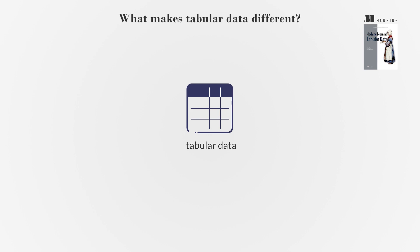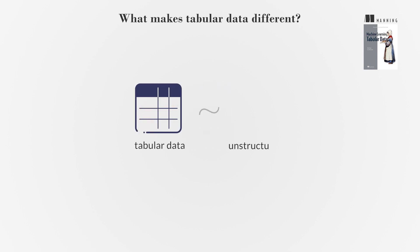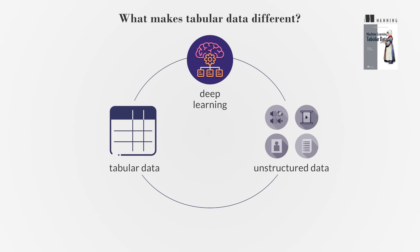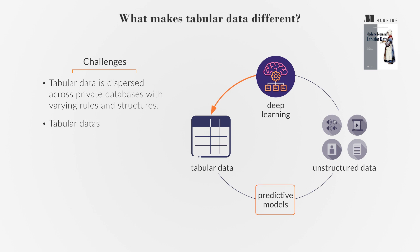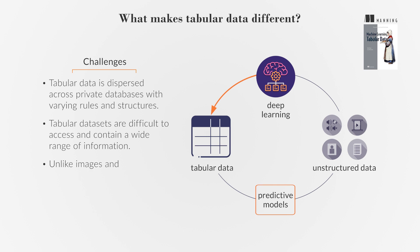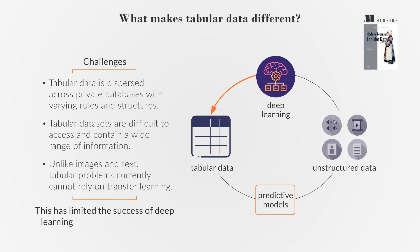Tabular data differs from other data types because it is structured in rows and columns, unlike unstructured data like audio, video, images, and text. Deep learning has revolutionized the process of transforming unstructured data into a structured format for predictive models. However, deep learning has faced challenges when applied to tabular data, primarily because tabular data is dispersed across private databases with varying rules and structures. Tabular datasets are difficult to access and contain a wide range of information, making it challenging to apply pre-trained deep learning solutions. Unlike images and text, where deep learning models can be easily shared and adapted, tabular problems currently cannot rely on transfer learning. This has limited the success of deep learning models for tabular data.